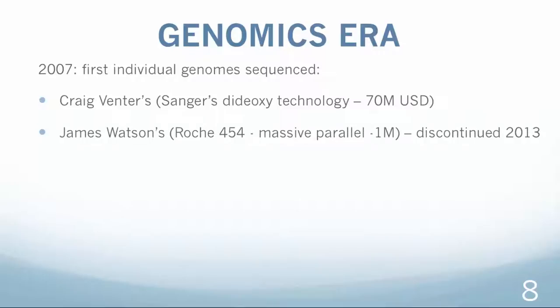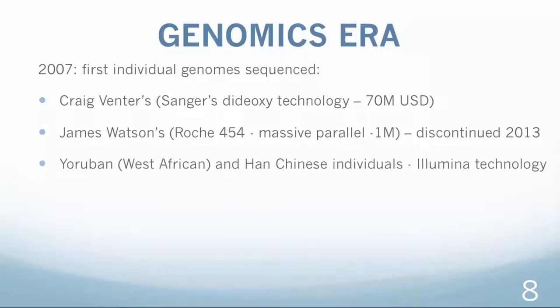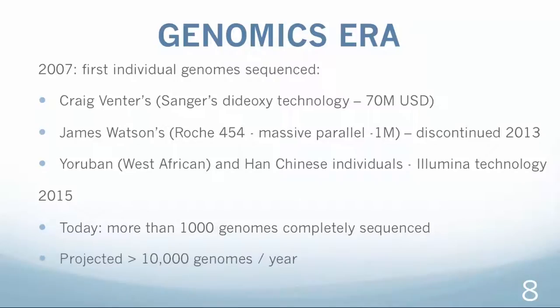James Watson's genome was sequenced within two months using the Roche 454 GSLFX platform at Baylor College of Medicine at a cost of approximately 1 million dollars. And later the same year, several individuals representing the population of West Africa and Southeast Asia were sequenced using the Illumina technology. Today we already have over 1,000 human genomes completely sequenced and it is projected that we will shortly achieve an output of about 10,000 genomes per year.